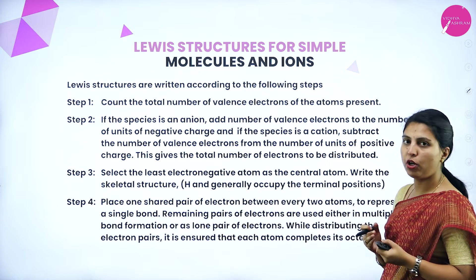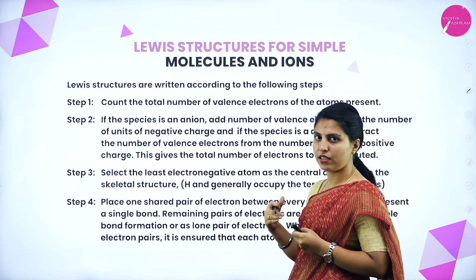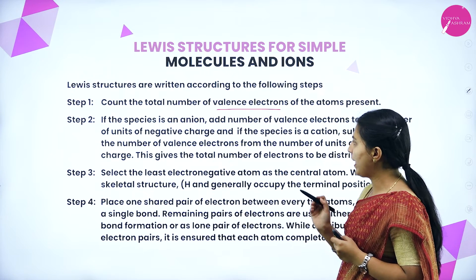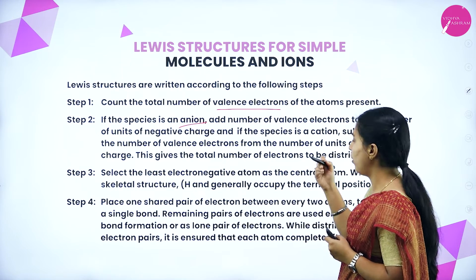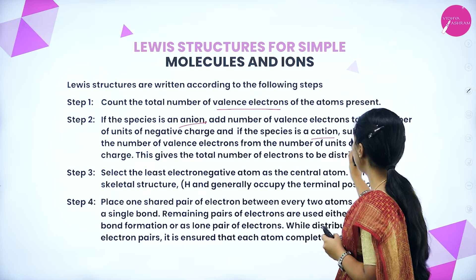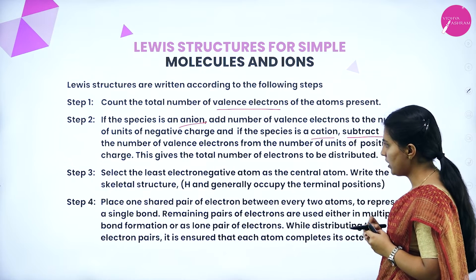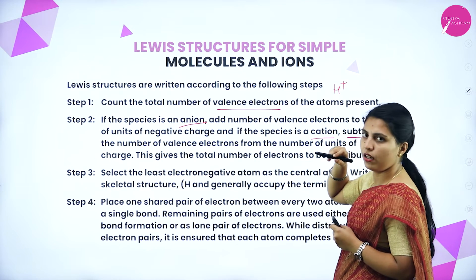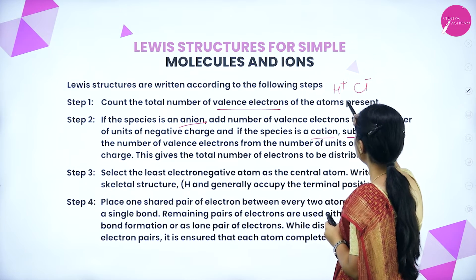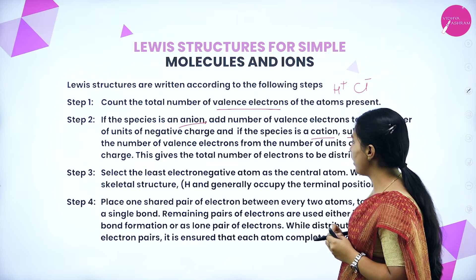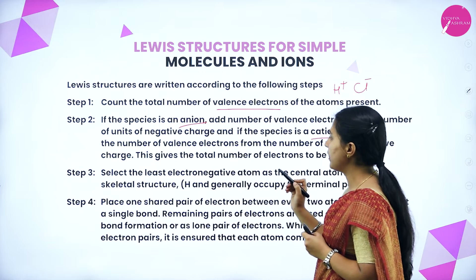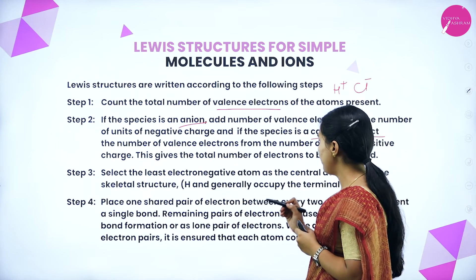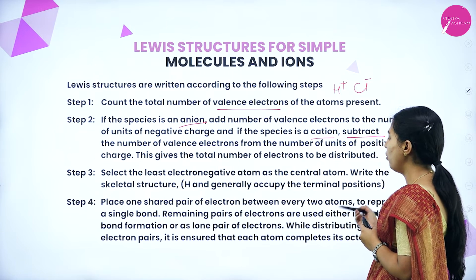Next, Lewis structures for simple molecules and ions. First, count the total number of valence electrons of the atoms present. If the species is an anion, add the number of electrons equal to the number of units of negative charge. If the species is a cation, subtract the number of electrons equal to the units of positive charge. This gives the total number of electrons to be distributed. Select the least electronegative atom as the central atom, write the skeletal structure, place one shared pair of electrons between every two atoms for a single bond. Remaining pairs are used either in multiple bond formation or as lone pairs.